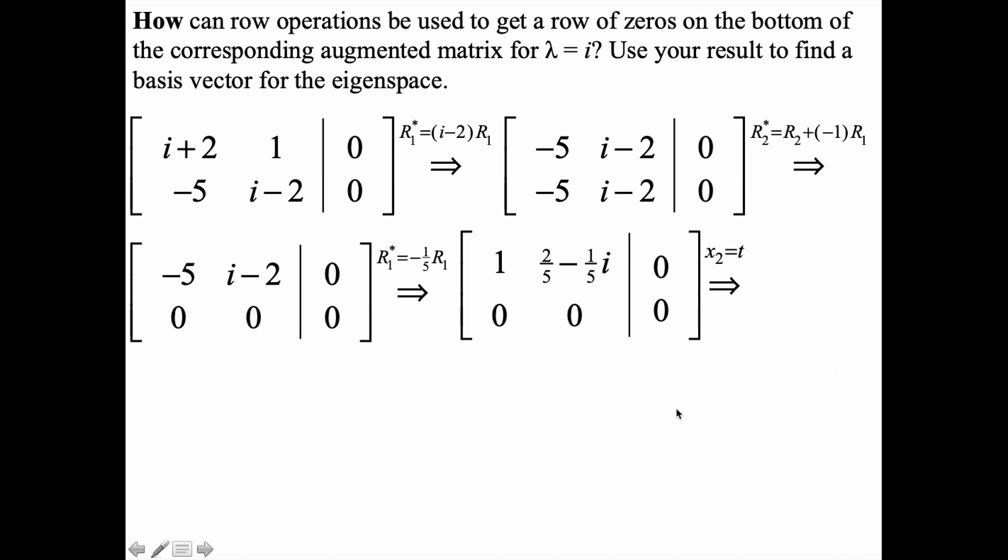Now we're ready to declare that x2 is a free variable. We only have one leading one, so if we let x2 equal the parameter t, we can express x1 as the additive inverse of that. You put that in front of t, and you let x2 equal t. This reveals to us the first eigenvector family.